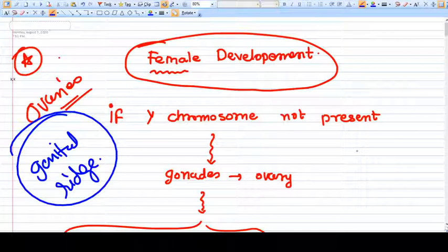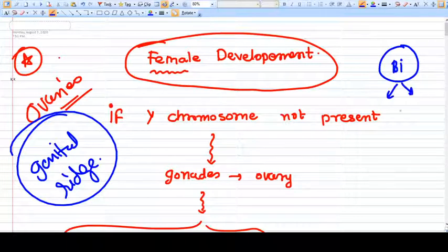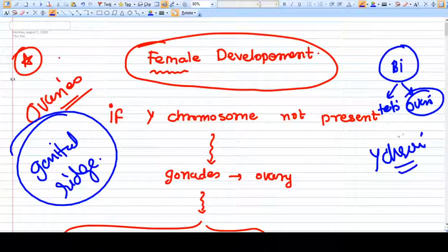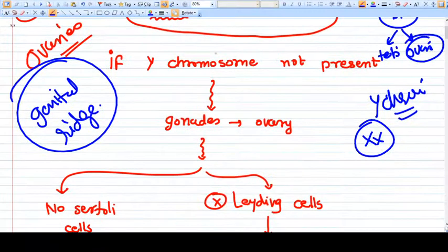You need to see first the male parts for understanding this video. For example, initially we have a gonad which is bipotential. It can be developed into either ovary or testis. If we don't have a Y chromosome, then if we have double X chromosome, that is a female genotype, the gonad will be developed into ovary.